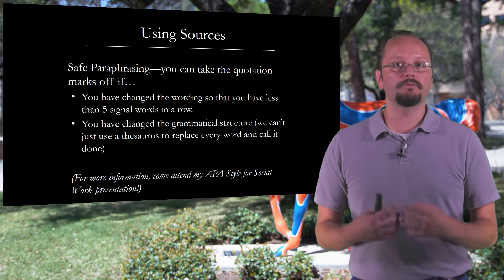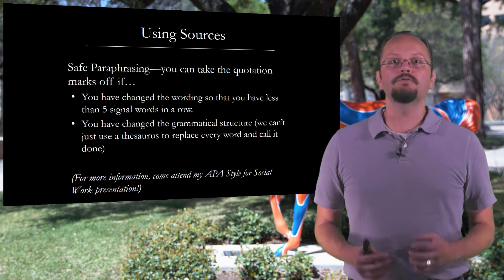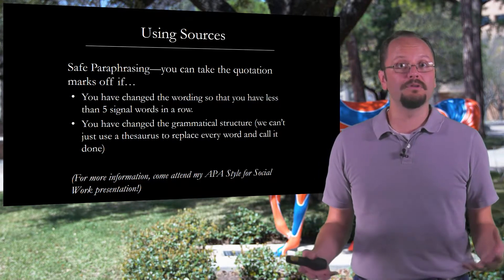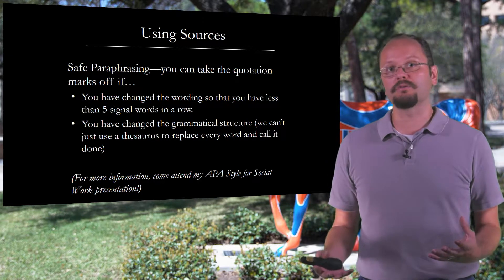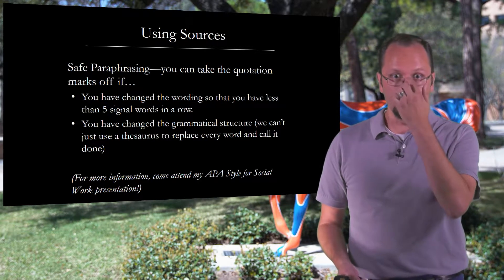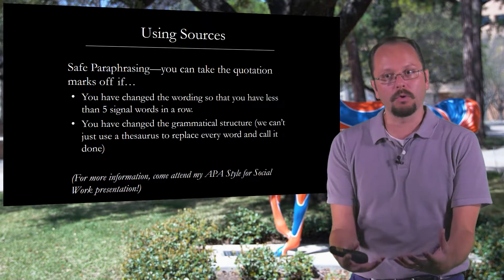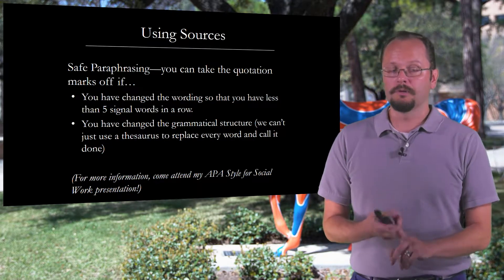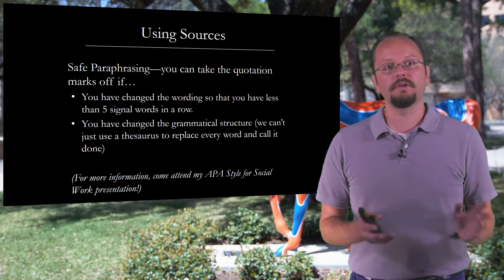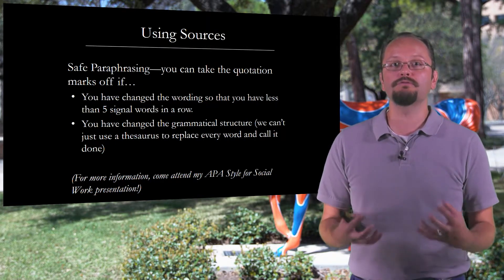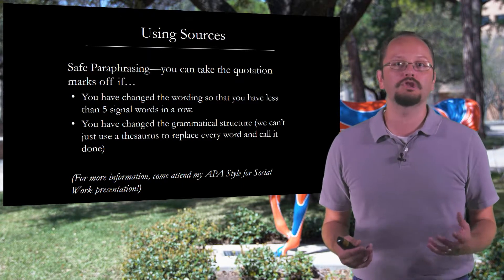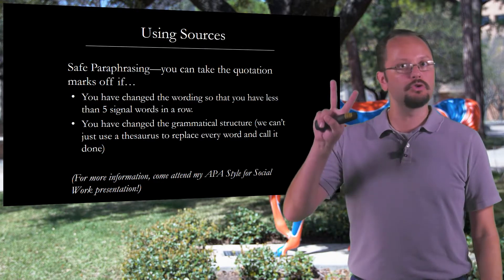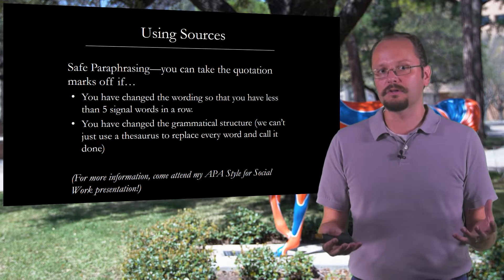A lot of the time we're asked to put information from our sources in our own words, and it's very important to do this correctly. If you don't change enough of the words in the sentence, you can end up accused of plagiarism — this happens unintentionally to a lot of people. So when you are removing the quotation marks and putting it in your own words, you have to make sure you're doing that effectively. There are two rules of thumb to check yourself. First, you can take the quotation marks off if you have changed the wording so that you have fewer than five signal words in a row — by signal words I mean the bigger, meaningful words, not articles like 'a' or 'the.' For example, 'child abuse' counts as two signal words.